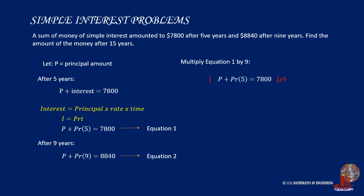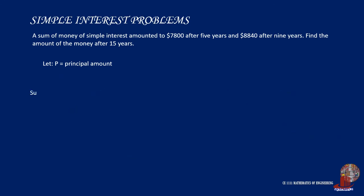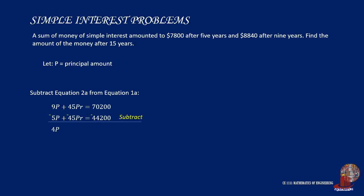Multiply equation 1 by 9 to get 9P plus 45PR equals 70,200 — equation 1A. Multiply equation 2 by 5 to get 5P plus 45PR equals 44,200 — equation 2A. Subtracting equation 2A from 1A eliminates R: 9P minus 5P gives 4P, and 70,200 minus 44,200 gives 26,000. Dividing both sides by 4, P is computed as $6,500.